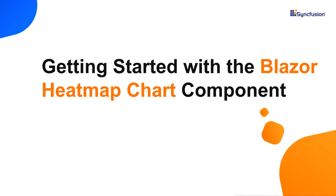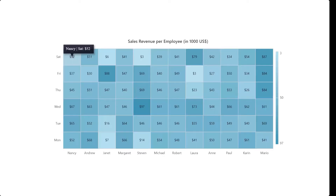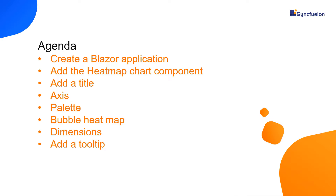Hi everyone, welcome back. In this video, I'll explain how easy it is to add the Syncfusion Blazor heatmap chart component to a Blazor WebAssembly application. Here you can see a heatmap component that depicts a summary of sales revenue achieved by the employees in a week. Based on the values, each rectangular box is represented with a gradient or solid color variation. I will show you how to implement this and configure a few of its basic features like plotting data points, bubble heatmap chart, axis, palette, dimensions, and tooltip.